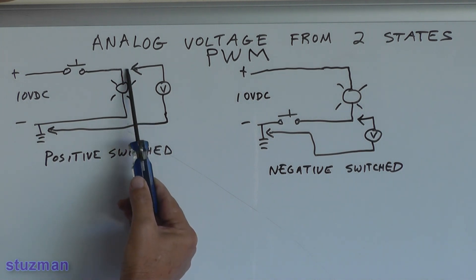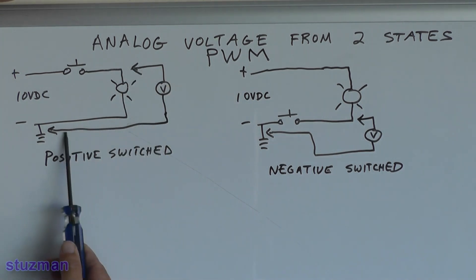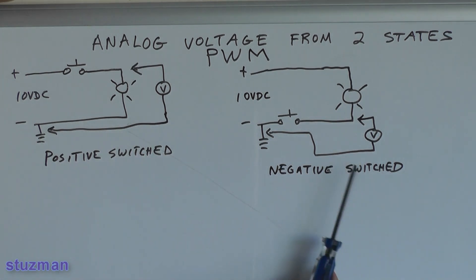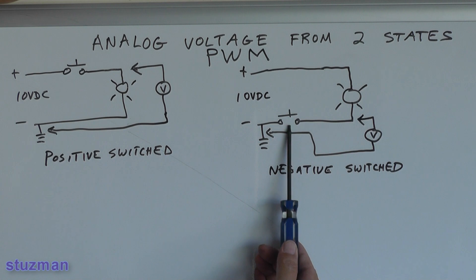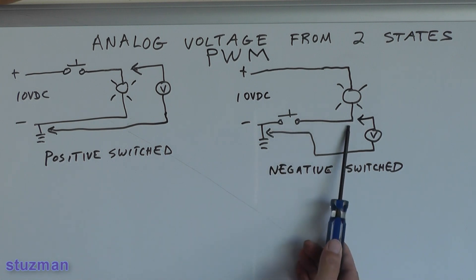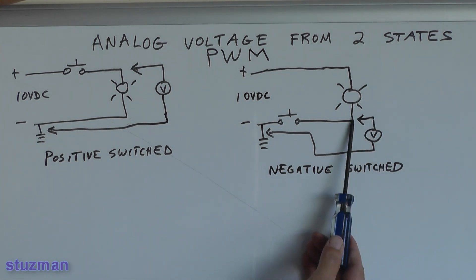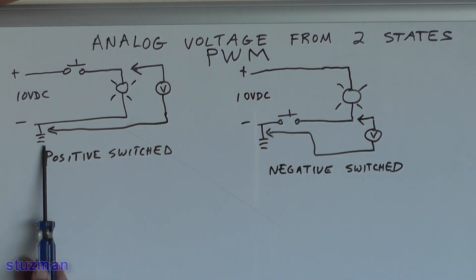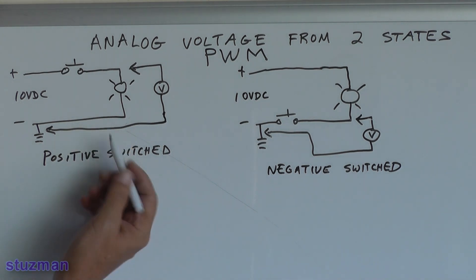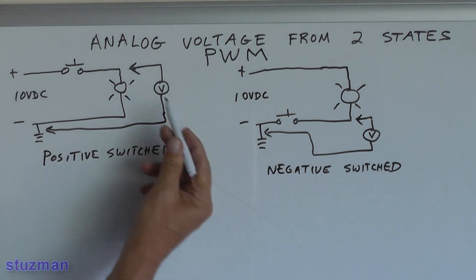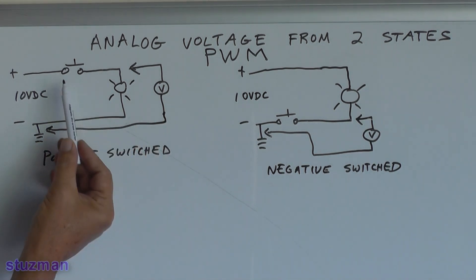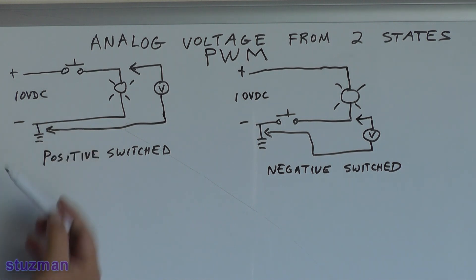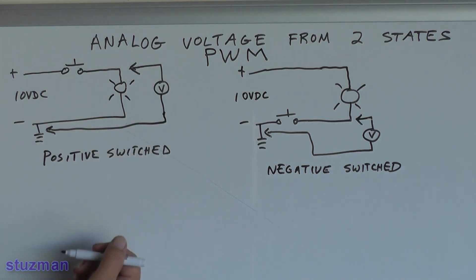The volt meter is connected right across the light bulb. You can see it's going to go to ground — that's typically how it's grounded in a car. Now if you look over here on this second circuit, this is a negative switch side. Here we have the push button, and now it's in the negative side of the circuit. The volt meter is hooked up on the negative side of the light after the push button, and the other side again goes to ground. Now let's take a look at the positive side switch first. Right now this is a normally open push button — typically it's a transistor inside of a PCM or some kind of controller. Right now it's open, so if I look at the volt meter, what would I read? I'd read zero volts.